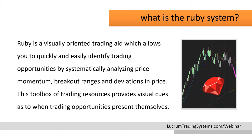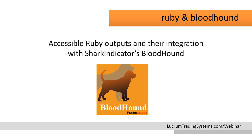Now we'll jump into the Ruby system, which is Lucrum Trading System's flagship product. Ruby is a visually oriented trading aid which allows you to quickly and easily identify trading opportunities by systematically analyzing price momentum, breakout ranges, and deviations in price. This toolbox of trading resources provides visual cues as to when trading opportunities present themselves. Ruby and Bloodhound work together very well because all of the components of the Ruby system have accessible outputs you can use to create solvers within Bloodhound and create different logic matrices.